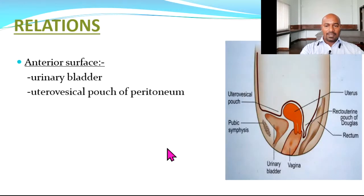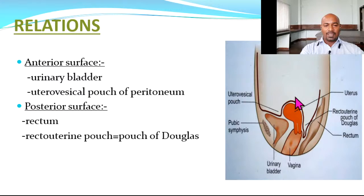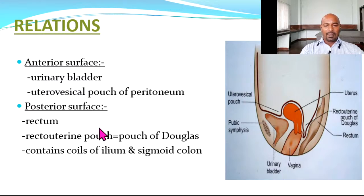Coming to the relations — the anterior surface is related to the urinary bladder, and there is a pouch of peritoneum between the urinary bladder and the uterus called the uterovesical pouch. The posterior part is related to the rectum, and separating the rectum and uterus there is a pouch of peritoneum behind the uterus called the pouch of Douglas, which contains coils of small intestine — the ileum and the sigmoid colon.